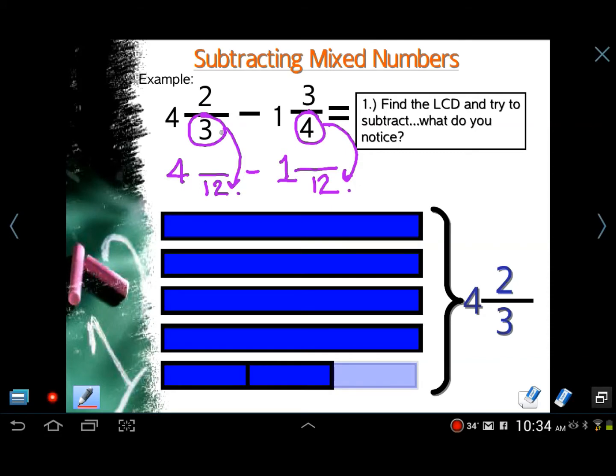I'm going to follow the same rules I always have. If the denominator changes, the numerator changes. Three changed by a factor of four, so that's what I'm going to multiply the two by. The four changed by a factor of three. So two times four is eight. Three times three is nine. So now you have four and eight-twelfths minus one and nine-twelfths, ready to subtract. But you run into a problem right here. Eight minus nine is actually negative one. We cannot take nine away from eight. So we have to borrow here.